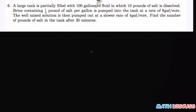This is question number six. It says a large tank is partially filled with 100 gallons of fluid in which 10 pounds of salt is dissolved. Brine, which is a solution of salt and water containing half pound of salt per gallon, is pumped into the tank at a rate of 6 gallons per minute. The well-mixed solution is then pumped out at a slower rate.